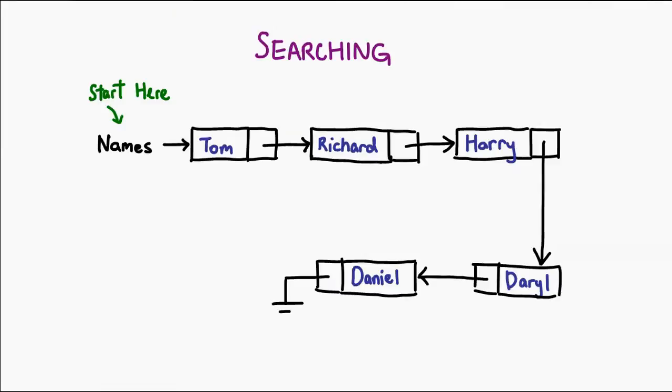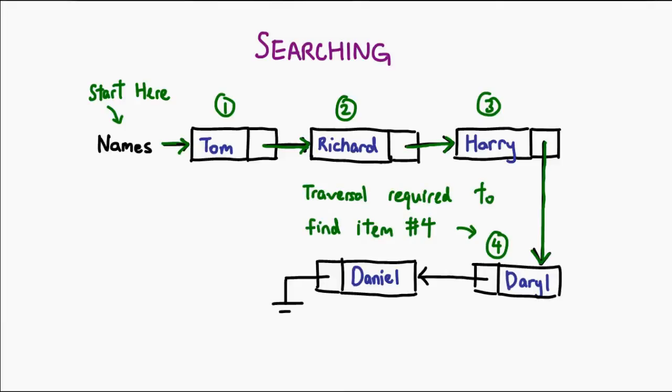So let's take a look at three of the most common operations that are done on a linked list. Starting with the simplest is read or access — we just want to find an element in this list. Notice that if I wanted to look at the fourth element, I couldn't just jump to it directly. Instead, I'm going to have to start at the head and count my way towards the fourth element. That is in fact one of the disadvantages of linked lists.